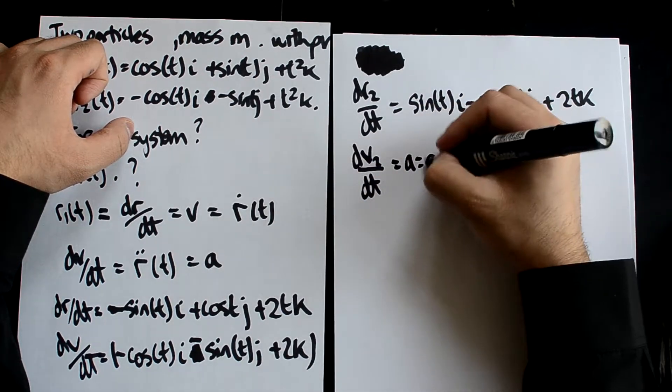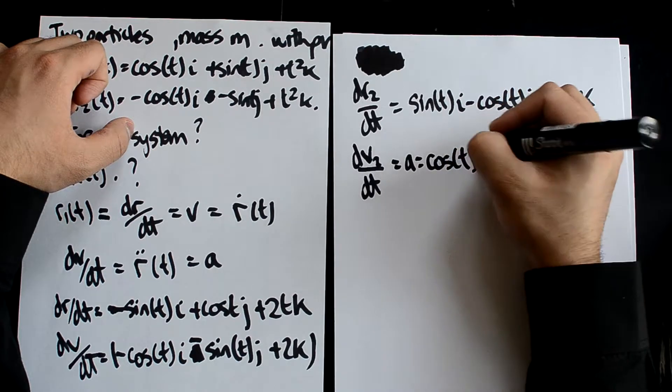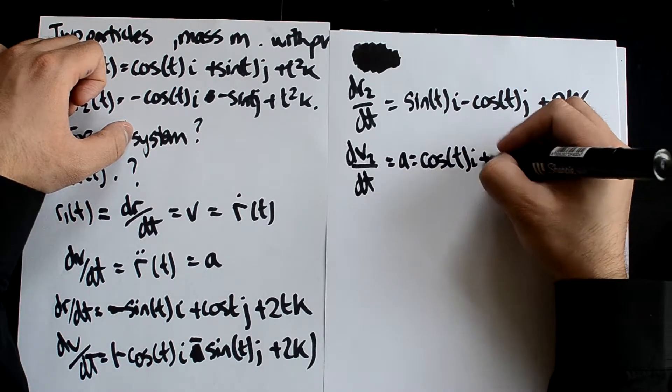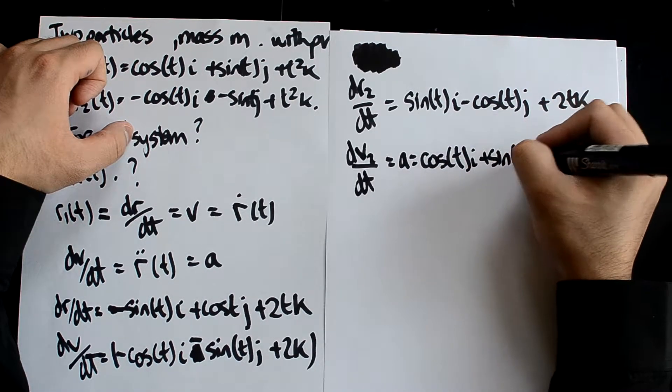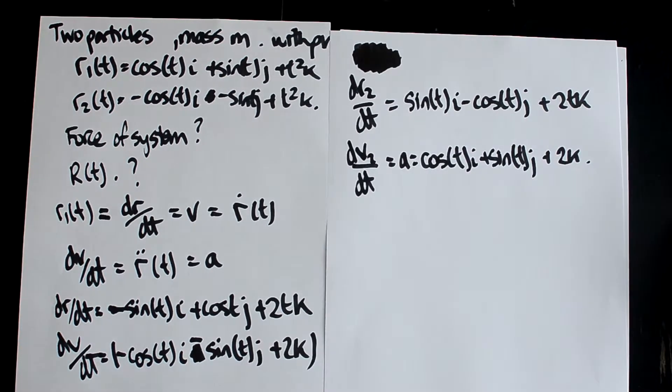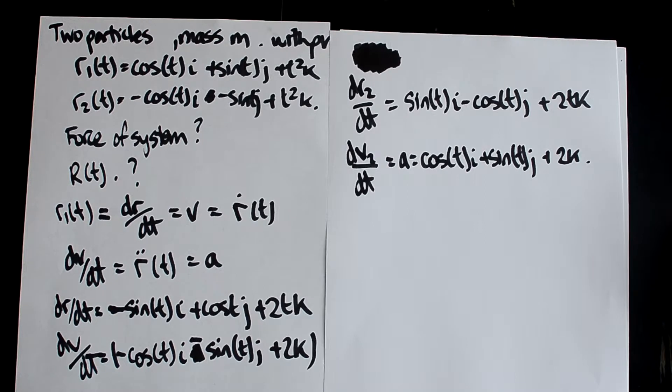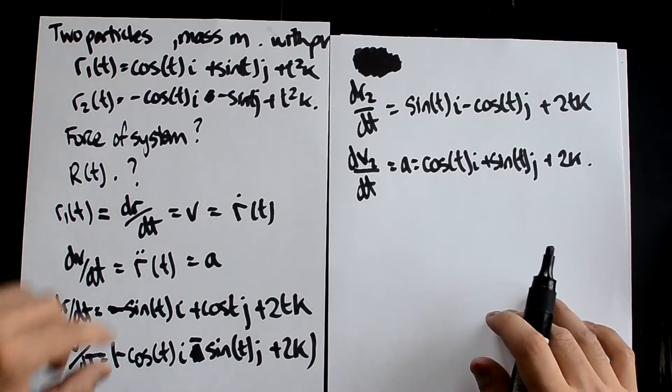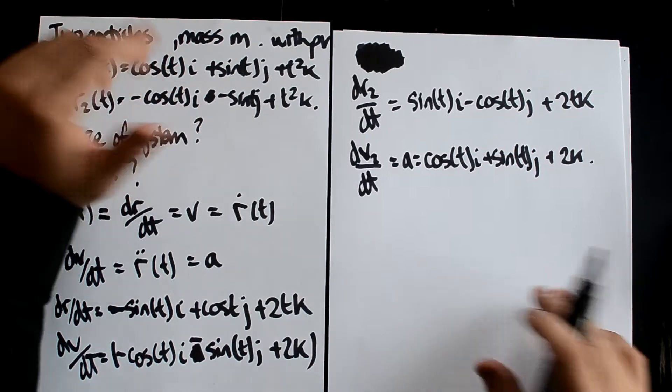And then the differential of that is going to equal the acceleration, which is going to be cos(t)i plus sine(t) plus 2k. So now we have two vectors, which were position vectors, that we've differentiated twice to get two accelerations.